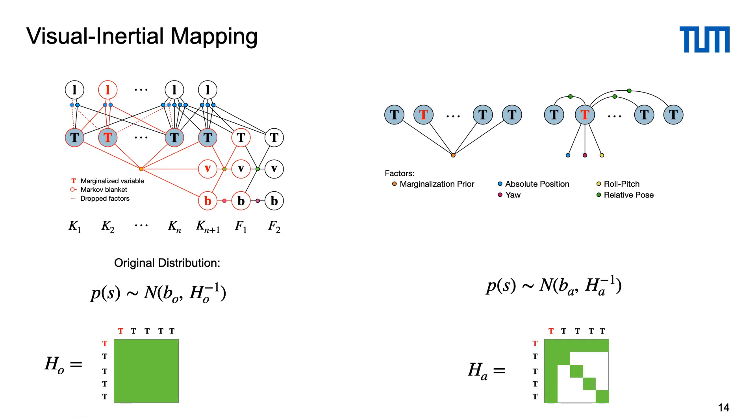If we look closer at the factor graph that we optimize in every step of the VIO we can see that there is a marginalization factor that connects all current keyframes shown in blue in the sliding window. Essentially this factor represents a probability distribution over the poses of the keyframes that is stored in the dense linearized form in an information matrix H and information vector B.